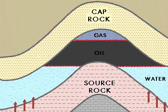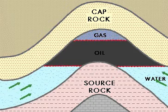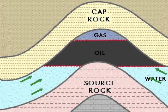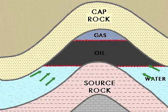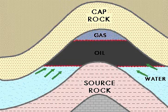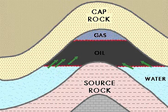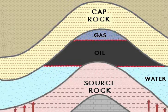Oil gets concentrated into commercial quantities by the process of migration. Migration of oil takes place in two distinct phases known as primary migration and secondary migration.